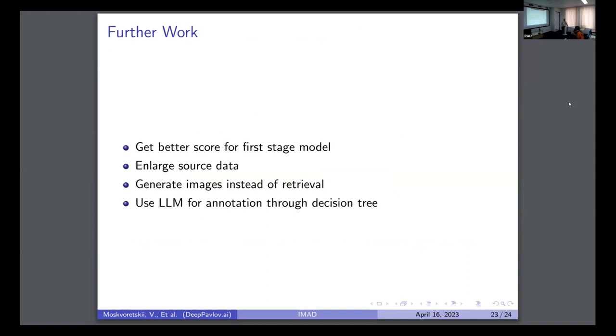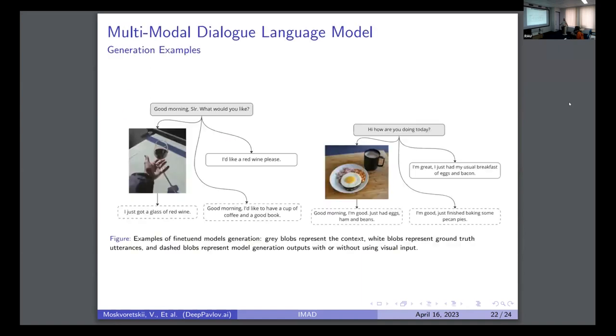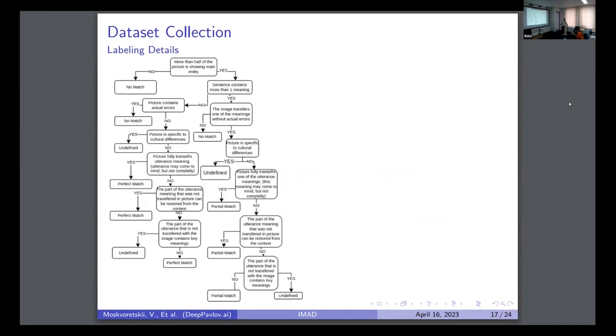So we have a lot of future work. We would like to get better scores for the first stage model. We would like to experiment a lot more with different architectures. We would like to enlarge source data. That means we would like to have more dialogue sources and more image sources. Also, we would like to try to generate images instead of retrieval, but we are scared to do this because the retrieved images are better. We wanted to use large language modeling for annotation for the decision tree. This means this annotation tree could be annotated with some language model or multimodal language model as well.